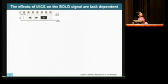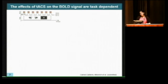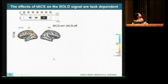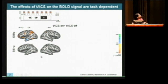In the first experiment, participants simply fixated on a cross — no task — and we applied TACS at different frequencies for 30-second blocks alternating with 30 seconds without stimulation. If you look at the effect of 10 Hz TACS, the stimulation mainly increases BOLD signal in parietal and frontal regions. However, when you look at the effect of 60 Hz, the stimulation does not modulate the BOLD signal very much in this condition.